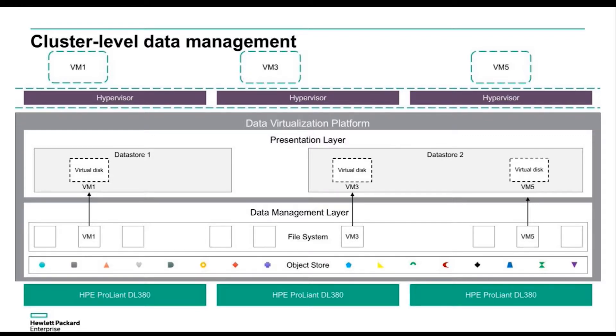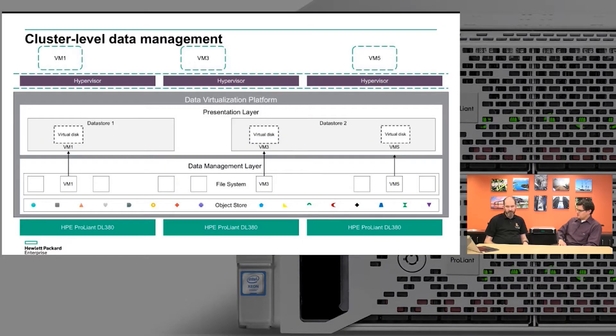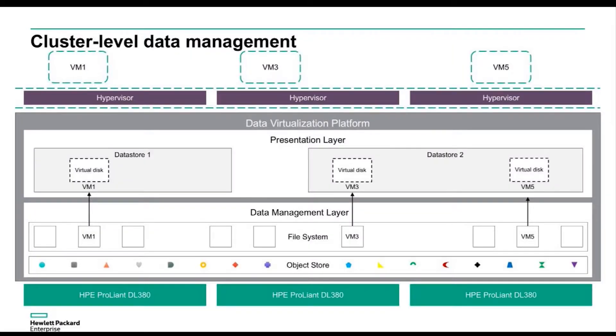All the stuff in the presentation layer is virtual — this is where the virtualization aspect of the DVP comes in. We can create whatever data stores, any size, resize them on demand up or down. The VMDKs themselves are really just constructs — presentations of the underlying data management layer, which is where we have a file system and an object store. Within that file system are what we call data containers — essentially the combination of all the data that defines a virtual machine. Below that in the object store is where we actually store the data, and every one of those blocks is unique with no duplication.